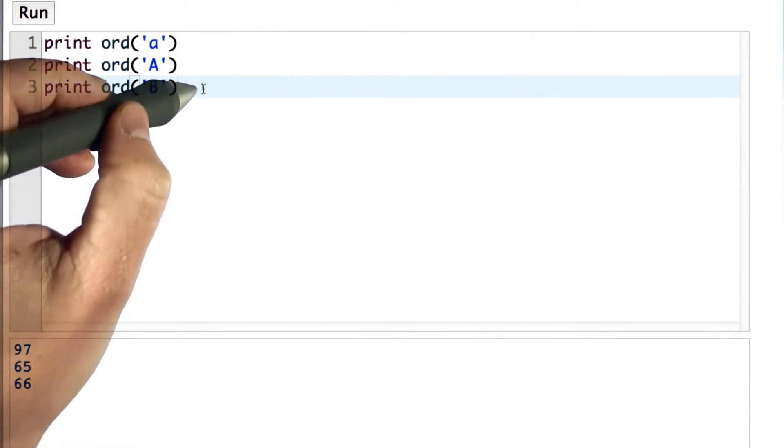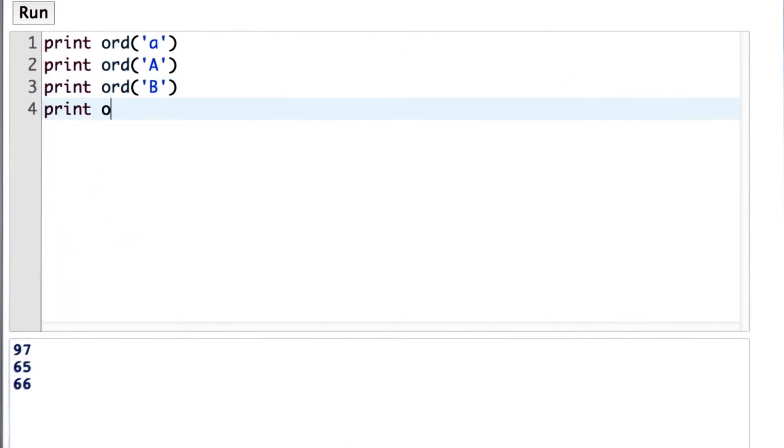The lowercase letters have different ordinals than the uppercase. So if we try a lowercase 'b', we should expect to get 98. And that is indeed what we get.